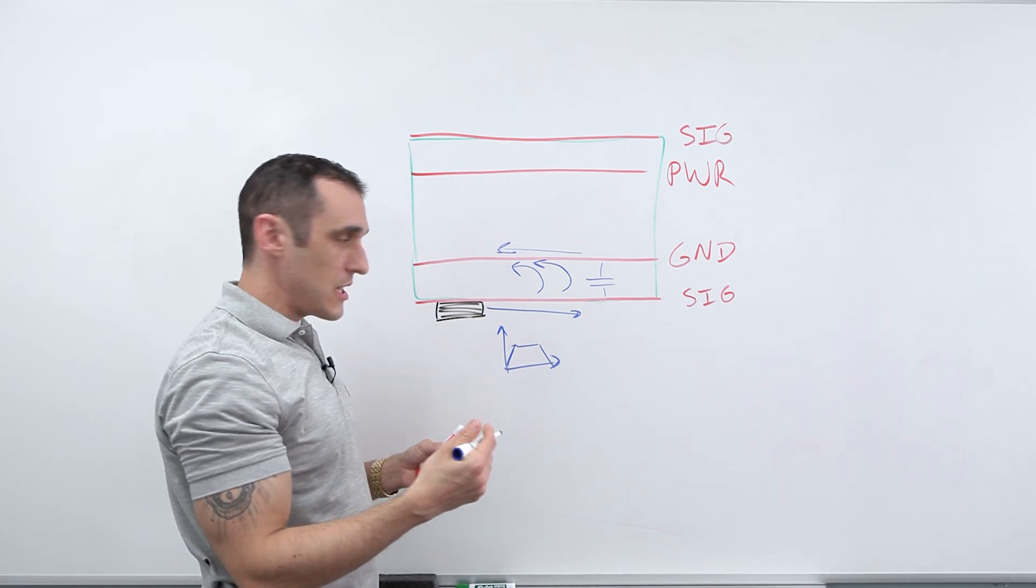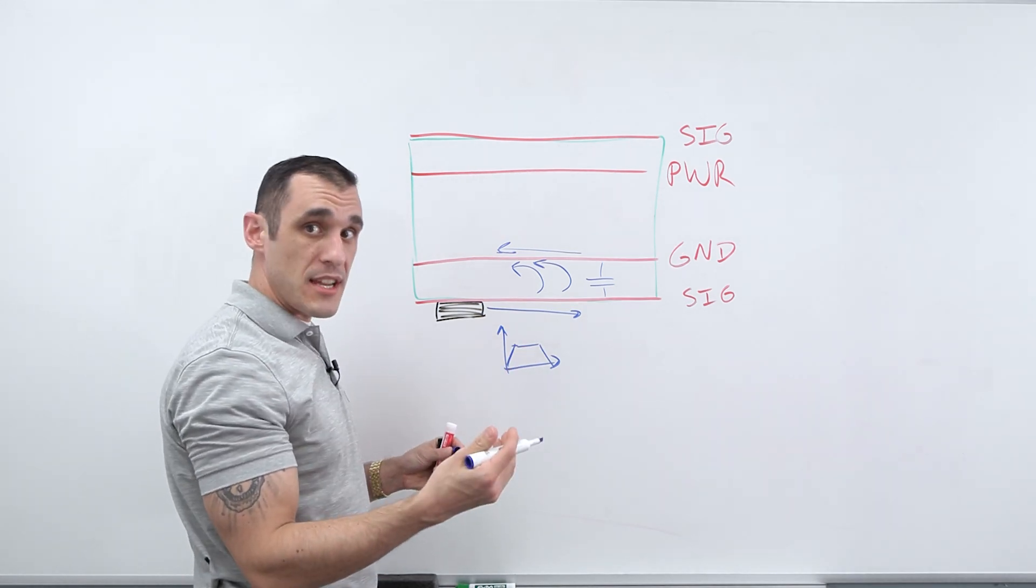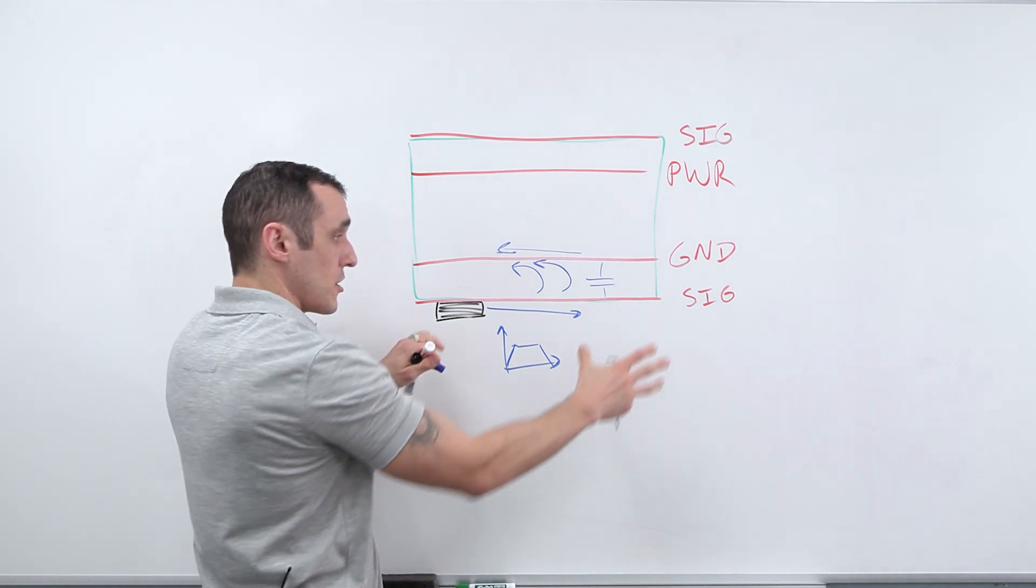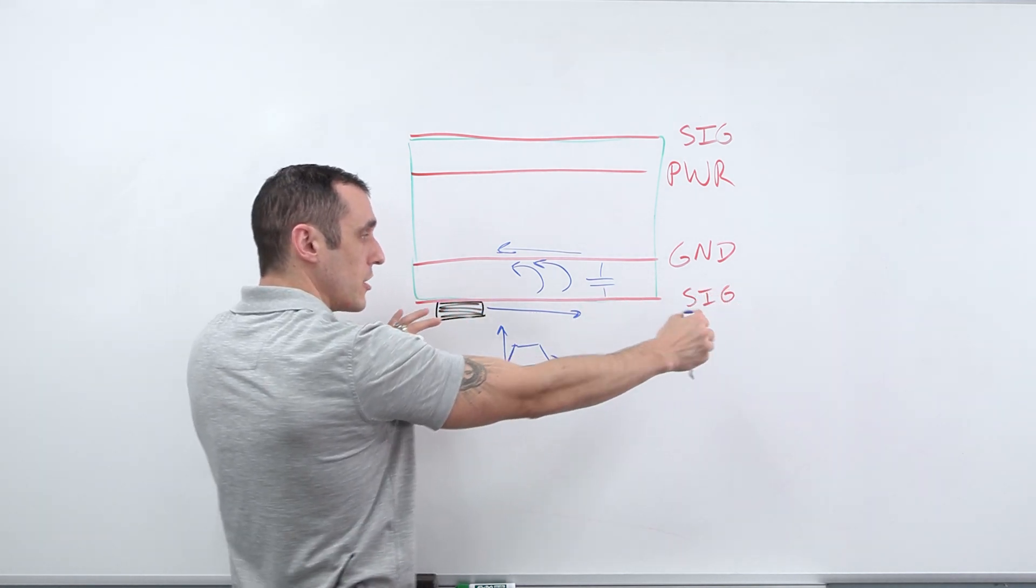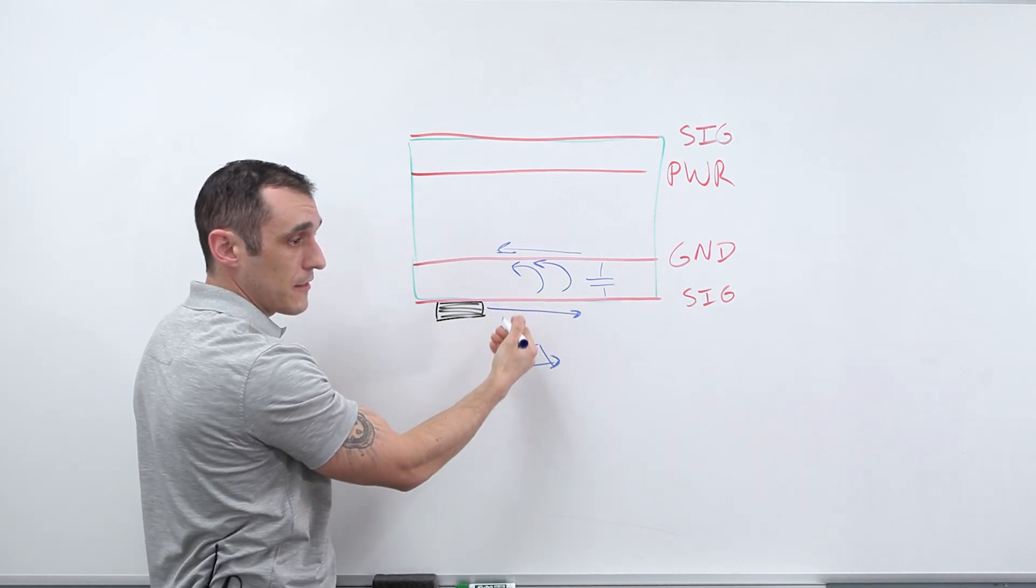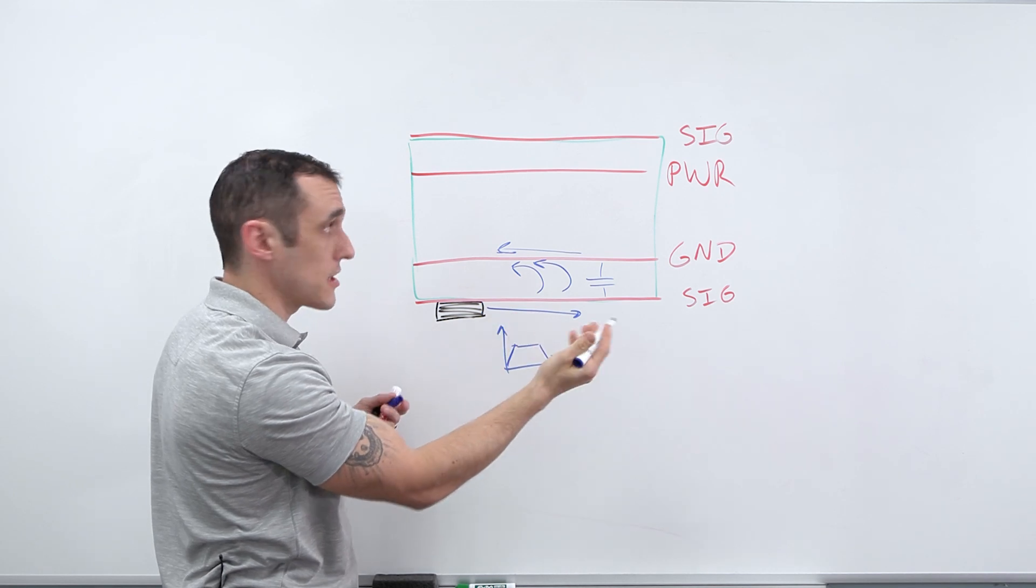One of the reasons why it's actually easier to work with high-speed and high-frequency signals in a mixed-signal PCB, as long as you kind of keep them in their own neighborhoods, is because the return current will tend to follow the path of the signal trace that is carrying the signal.